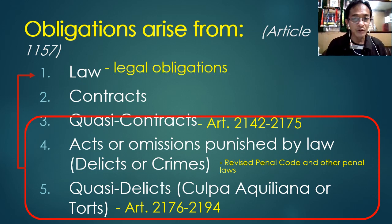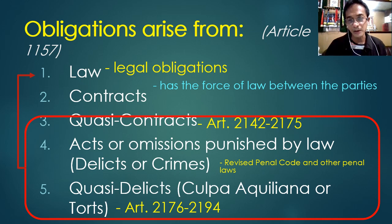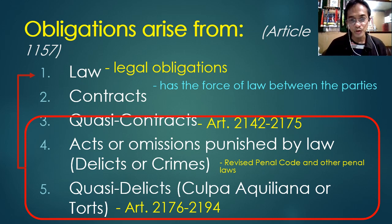Obligations arising from law are also called legal obligations. Contracts, on the other hand, are considered law between the parties. When you enter into a contract, you are actually making law among yourselves — between the parties only. So while a contract is not a law, it is like a law when it comes to the parties who are contracting with each other.